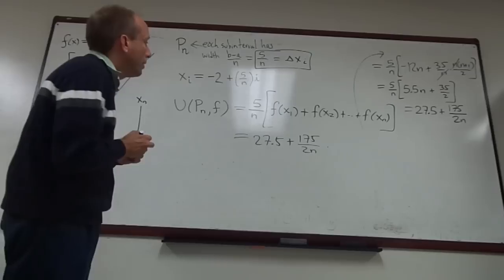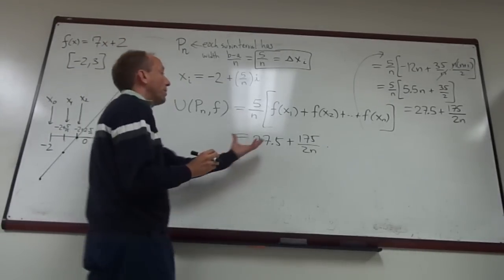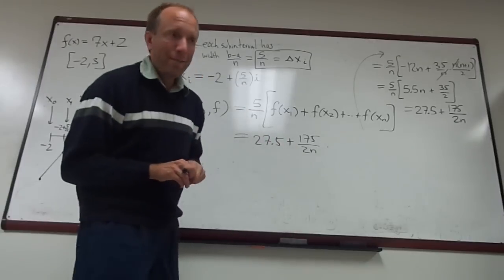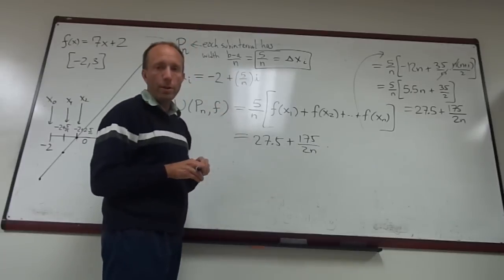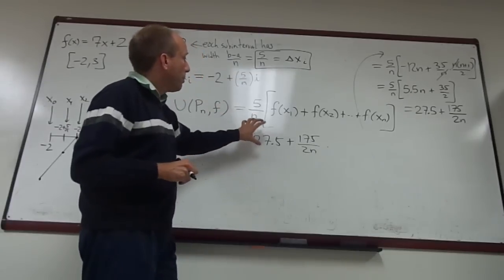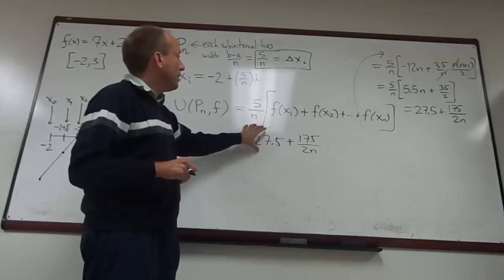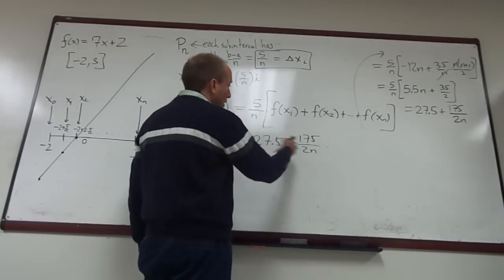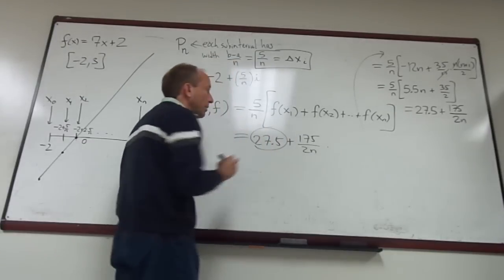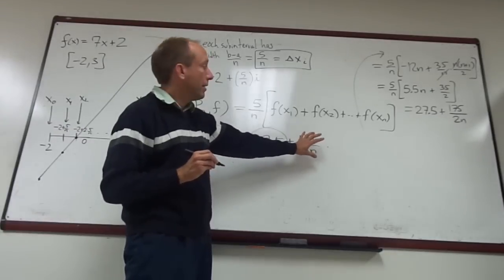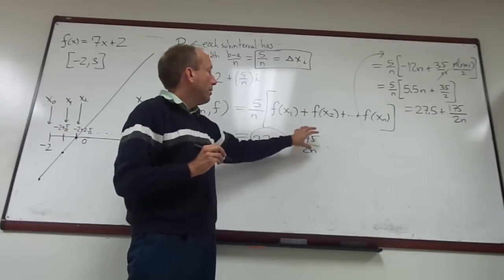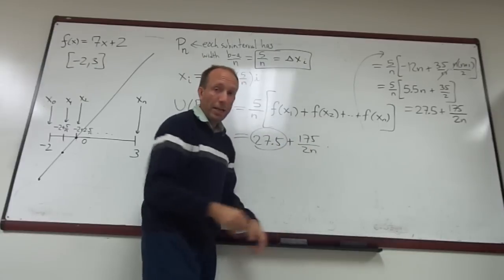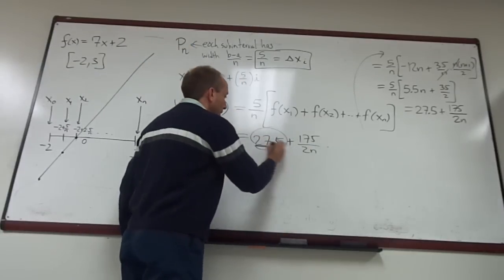On the other hand, each one of these is an upper estimate for the actual value of the Riemann integral, right? The upper Riemann integral is obtained by taking the infimum of all of these values. So the infimum of all of these values is actually 27.5 because the part that you're adding over here can become as arbitrarily small, positive small as you want. So 27.5 plus a little bit, and you take the infimum of all those values, you're going to get that.